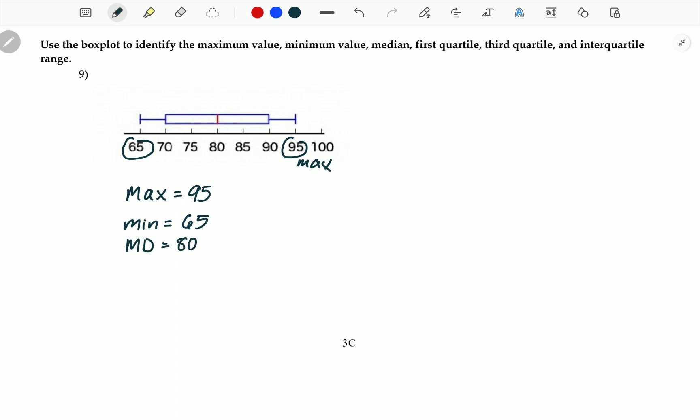The first quartile is going to be right here, which is 70. And the third quartile is 90.